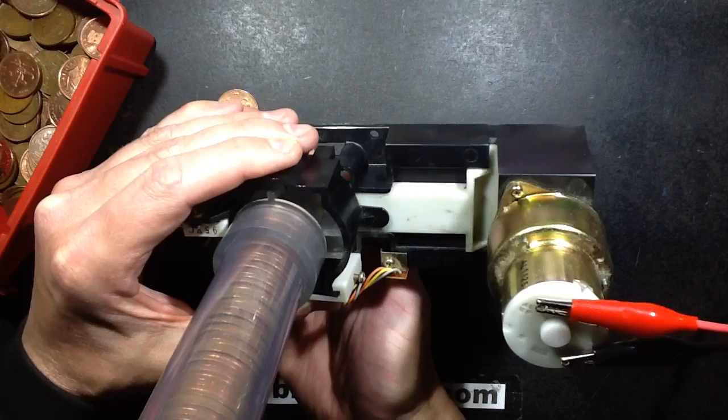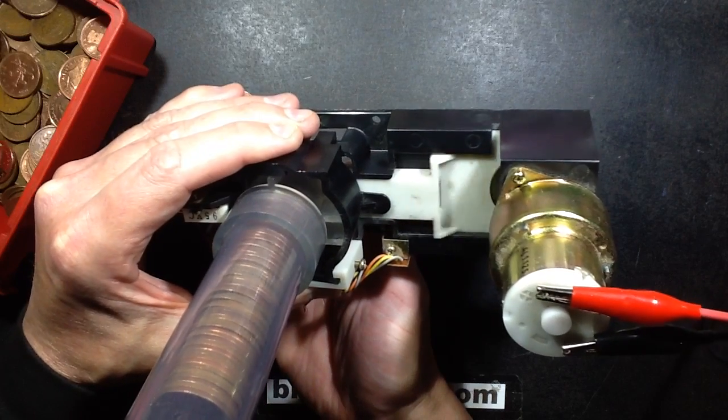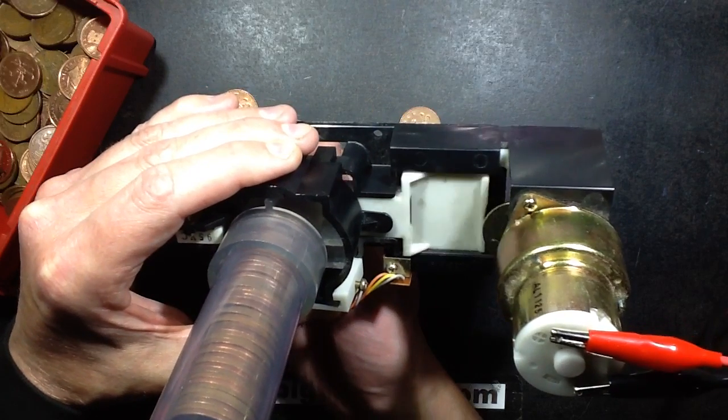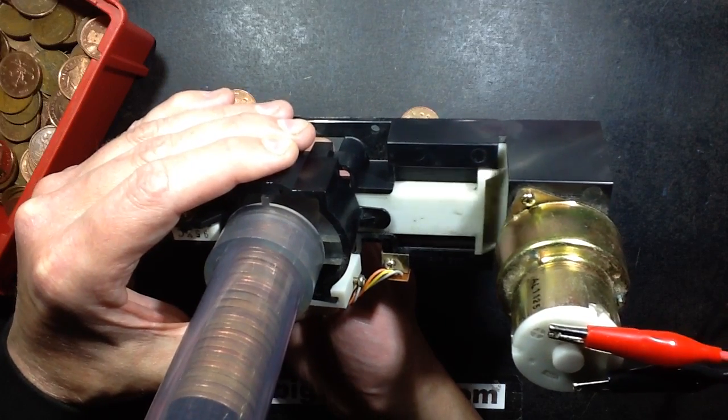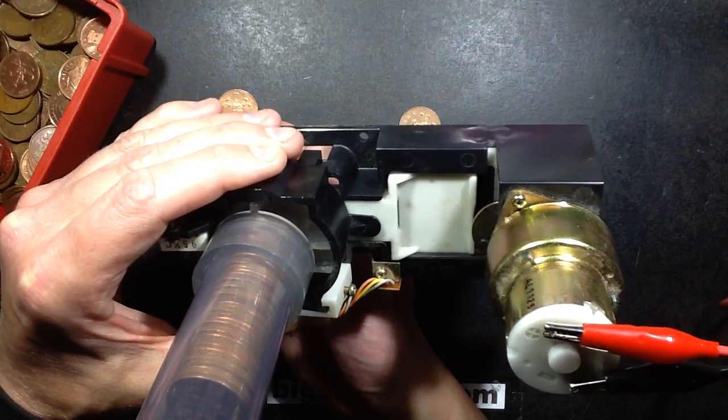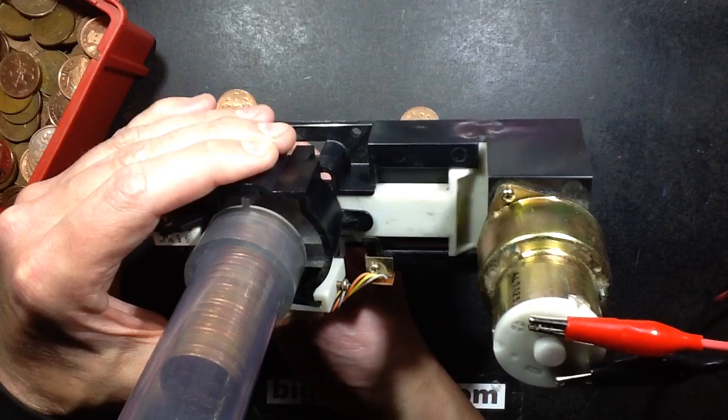It pops the coins out one at a time. That's it running at its rated voltage. It's 24 volts, drawing about 130mA on average, and that's as fast as it goes so not really a sort of high speed payout mechanism.